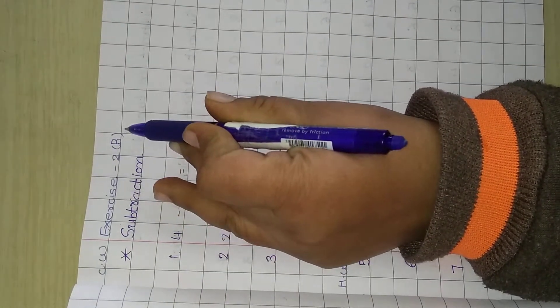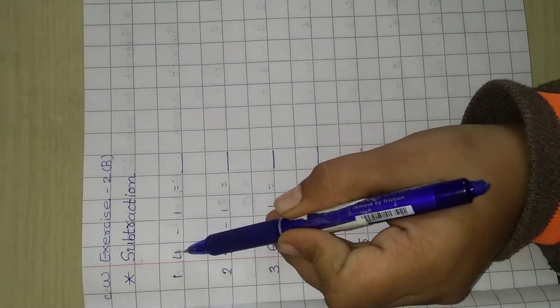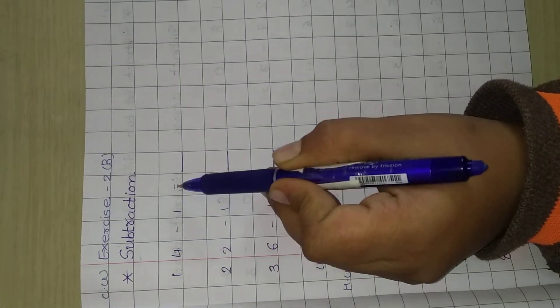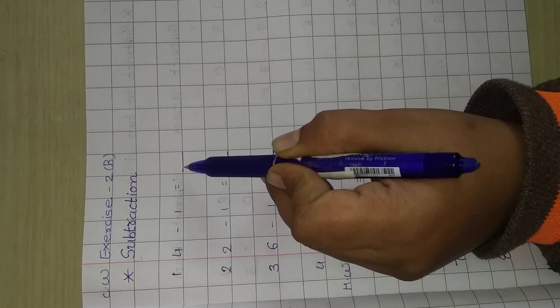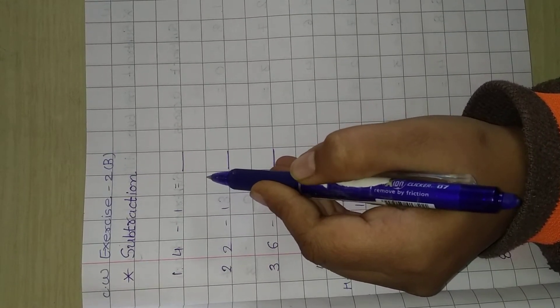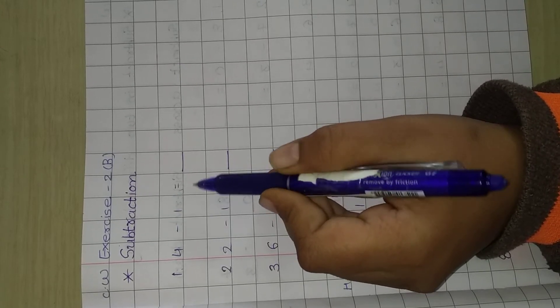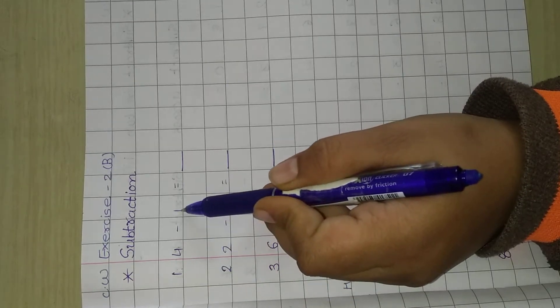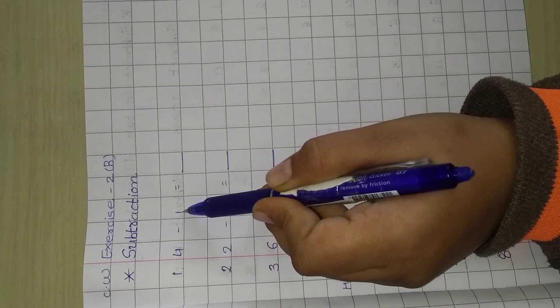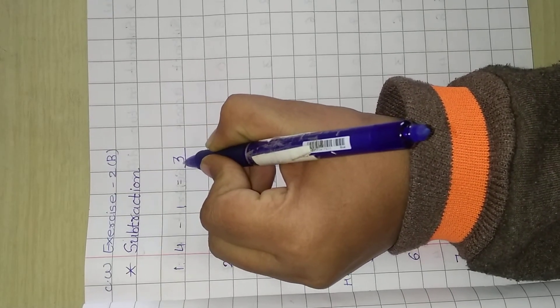Now next, exercise 2P subtraction. Problem 1: 4 minus 1 is equal to blank. Now in subtraction, any number minus 1, the answer is the number before. So here 4 minus 1. What is the number before 4? 3. So we write in the blank 3.